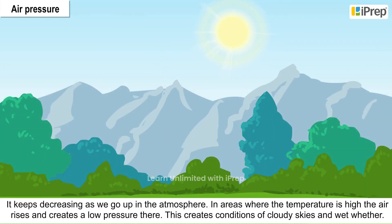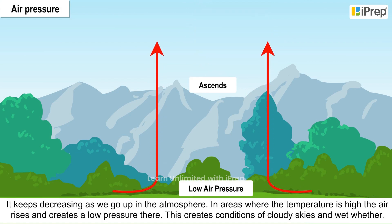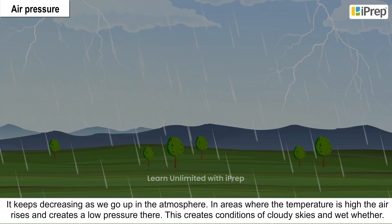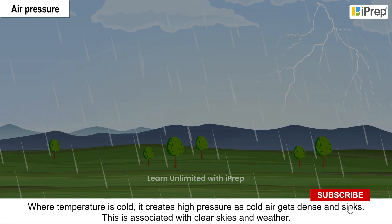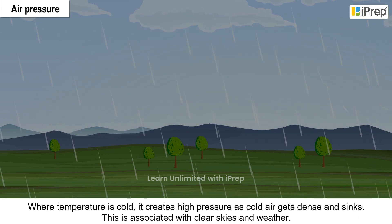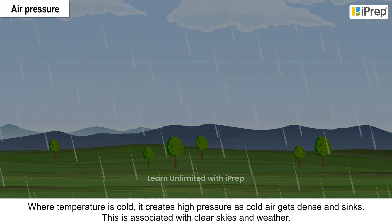In areas where the temperature is high, the air rises and creates low pressure, which creates conditions of cloudy skies and wet weather. Where temperature is cold, it creates high pressure as cold air gets dense and sinks; this is associated with clear skies and dry weather.